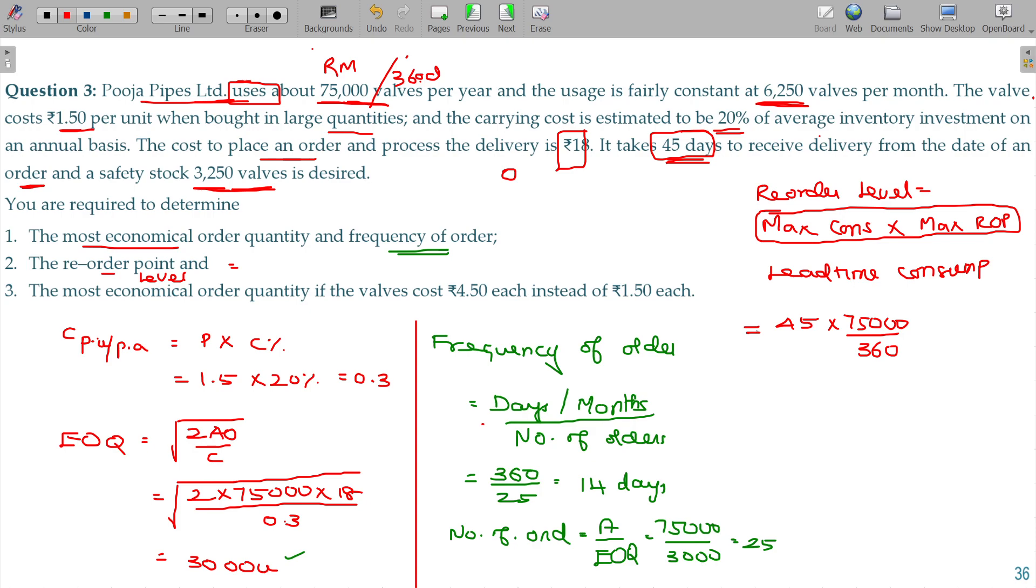What I do is maintain a commodity that will be called safety stock. We will add to the lead time consumption - add safety stock. Here the safety stock to be maintained is 3,250 valves.